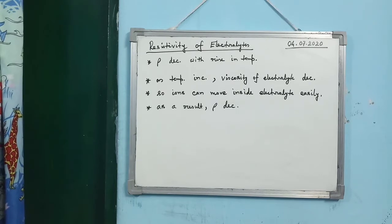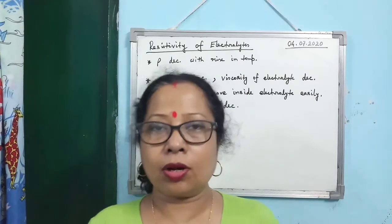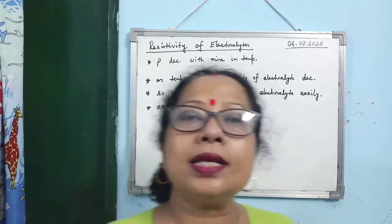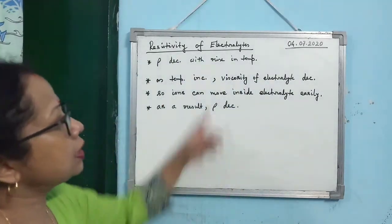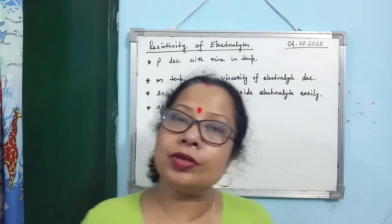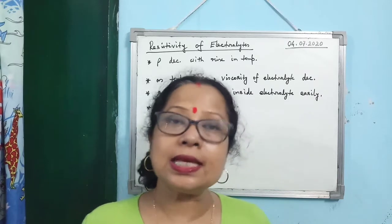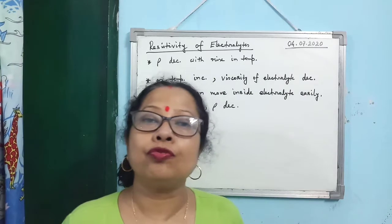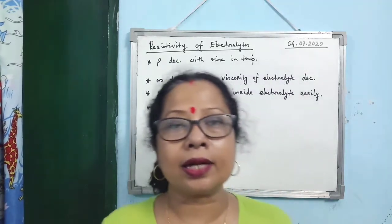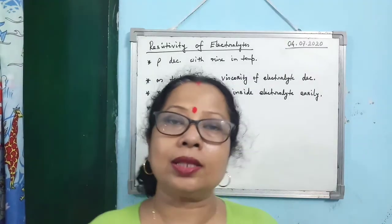Next is resistivity of electrolytes. Inside electrolytes, electricity is conducted due to movement of both positive and negative ions. If you increase temperature, resistivity decreases. Why? Because increasing temperature decreases the viscosity of the electrolyte — viscosity being the frictional force when one layer of liquid moves over another. As viscosity decreases, ions can move more freely within the electrolyte, conducting electricity better. Increased conductivity means decreased resistivity. So for electrolytes, resistivity decreases with rising temperature.